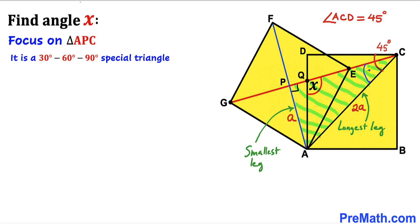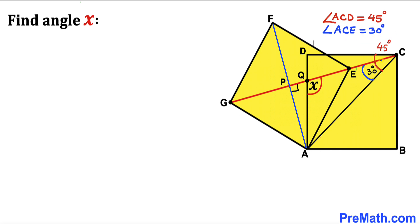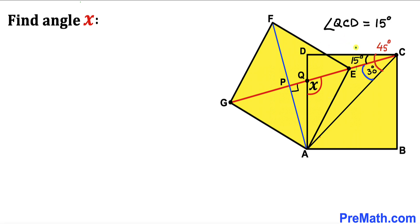We can see that our longest leg AC is twice the smallest leg AP, so we conclude this triangle APC is a 30-60-90 special triangle. Therefore this smallest angle is 30 degrees and this larger angle is 60 degrees. So angle ACP turns out to be 30 degrees. Now, the whole angle ACD is 45 degrees and angle ACP is 30 degrees, so this small remaining angle QCD is 45 minus 30, which gives us 15 degrees.